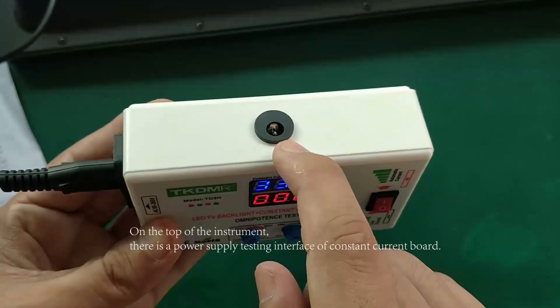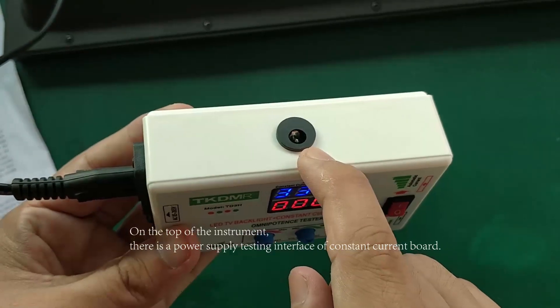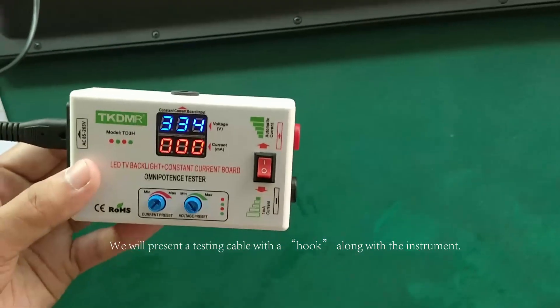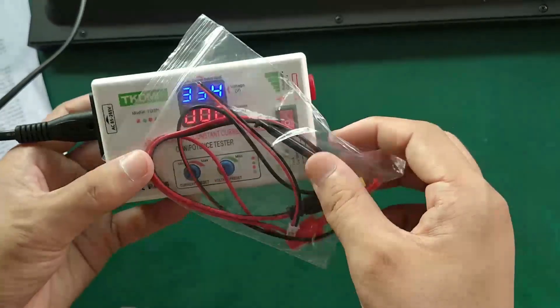On the top of the instrument, there is a power supply testing interface of constant current forward. We will present a testing cable with a hook along with the instrument.